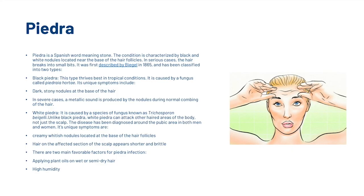Piedra is a Spanish word meaning stone. The condition is characterised by black and white nodules located near the base of the hair follicles. In serious cases the hair breaks into small bits. It was first described by Biegel in 1865 and has been classified into two types.